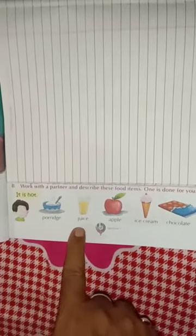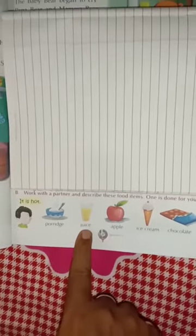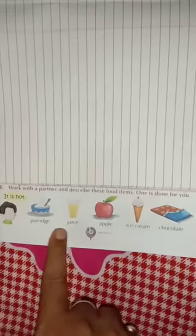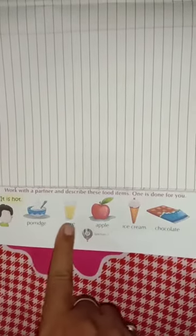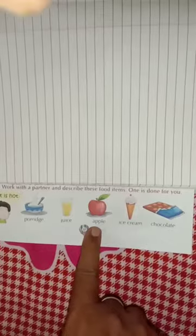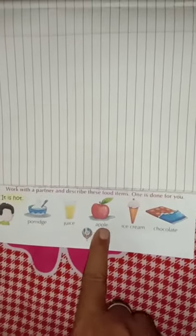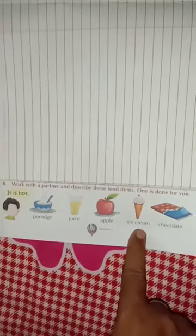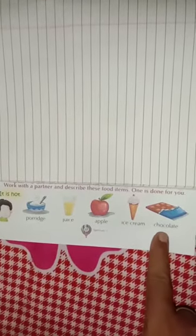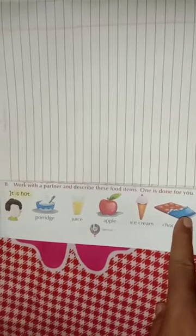you have to say juice. Juice is, it is cold. Juice is cold or it is cold. Apple. It is sweet. Ice cream. It is cold. Chocolate. Chocolate. It is sweet.